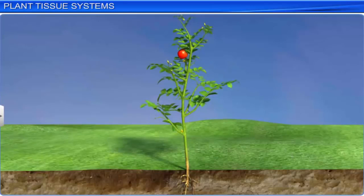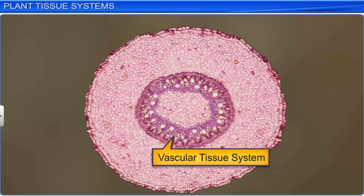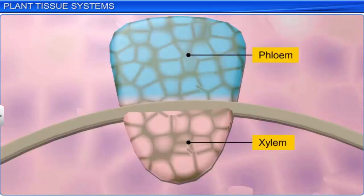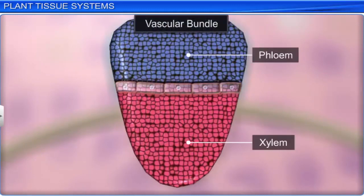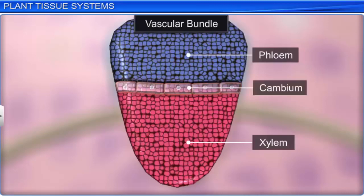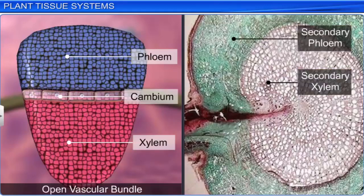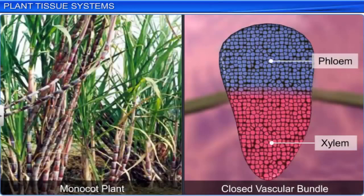The third type of tissue system is the vascular tissue system. It is composed of complex tissues, namely xylem and phloem, which together form vascular bundles. In the vascular bundles of dicotyledonous plants, cambium is present between the phloem and xylem. Due to the presence of cambium, such vascular bundles can form secondary xylem and phloem tissues and are known as open vascular bundles. In monocotyledonous plants, vascular bundles do not contain cambium. They are unable to form secondary xylem and phloem tissues, and are thus called closed vascular bundles.